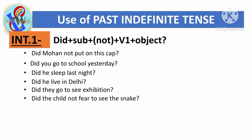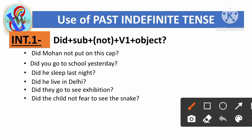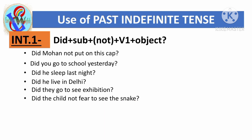'Did the child not fear to see the snake?' This is also a past indefinite sentence, so 'did' is used first. The subject is 'the child', then 'not' because it's negative, then the first form of the main verb 'fear', followed by 'to see the snake'.